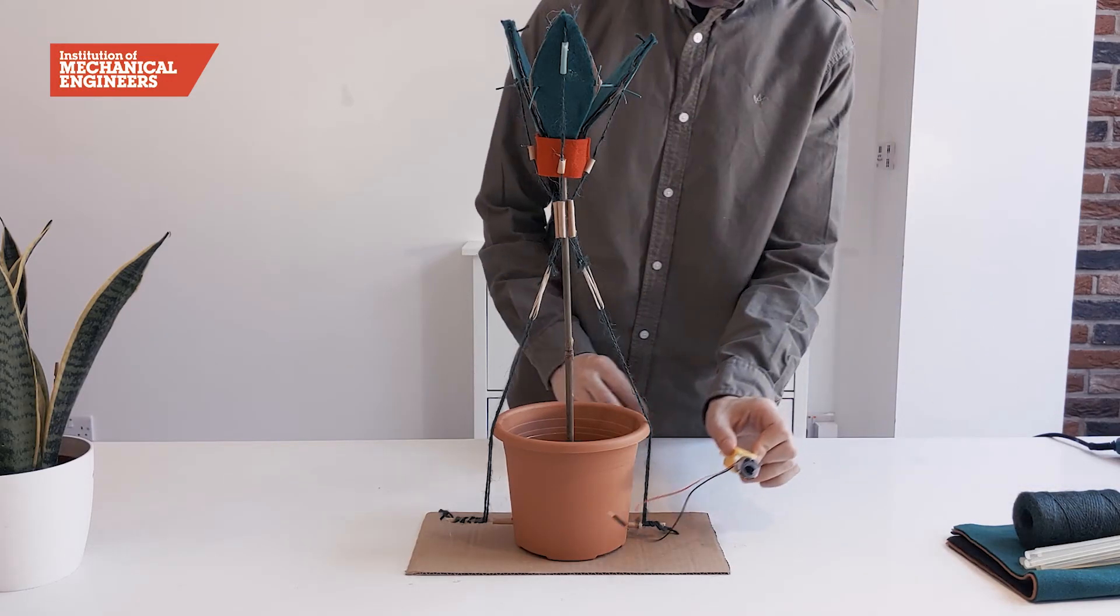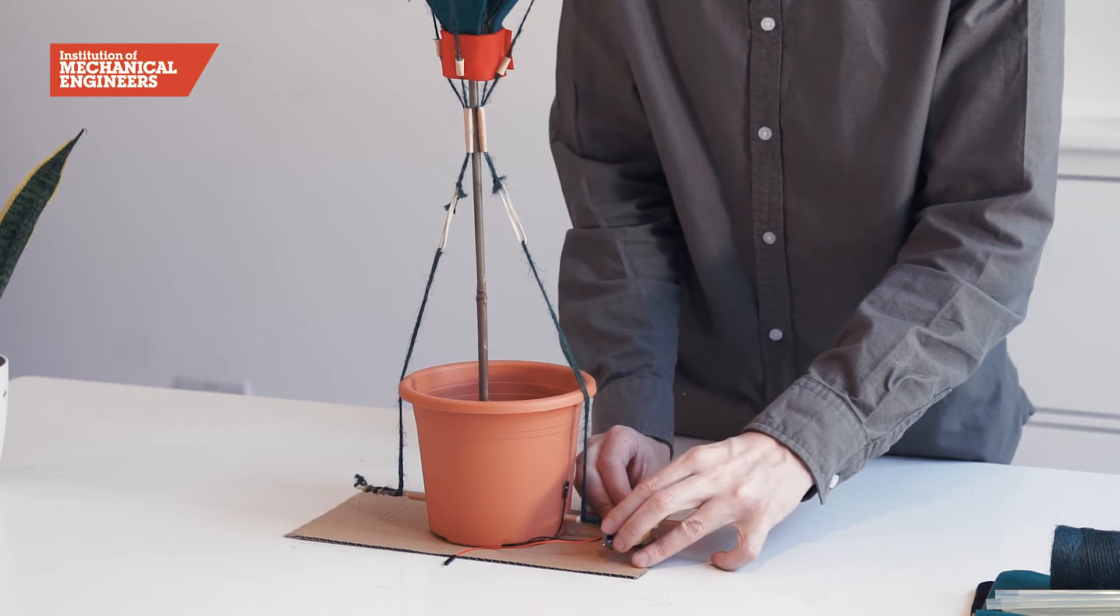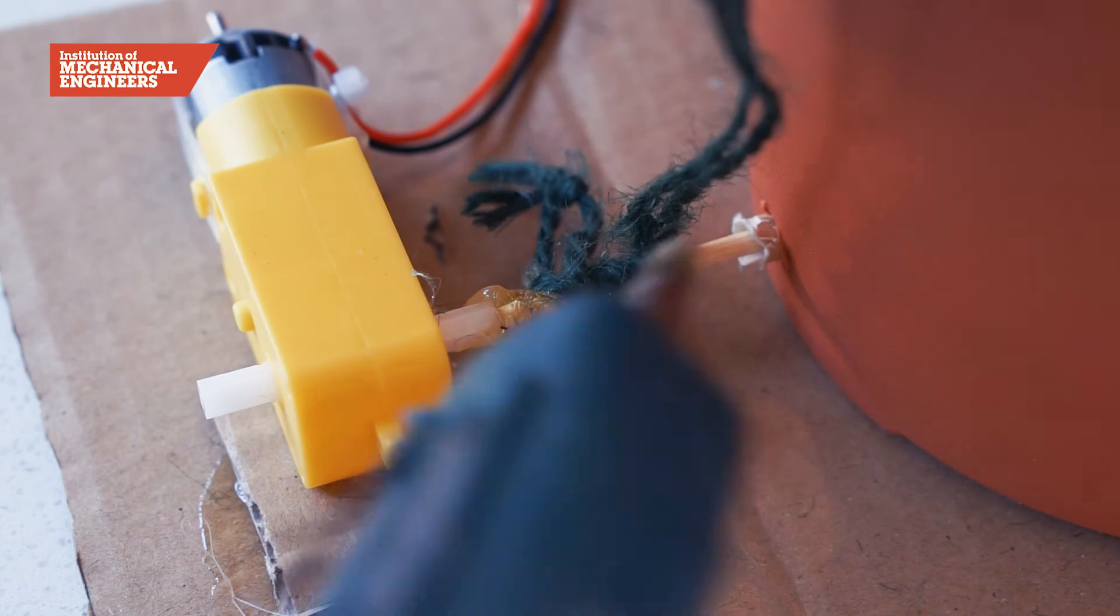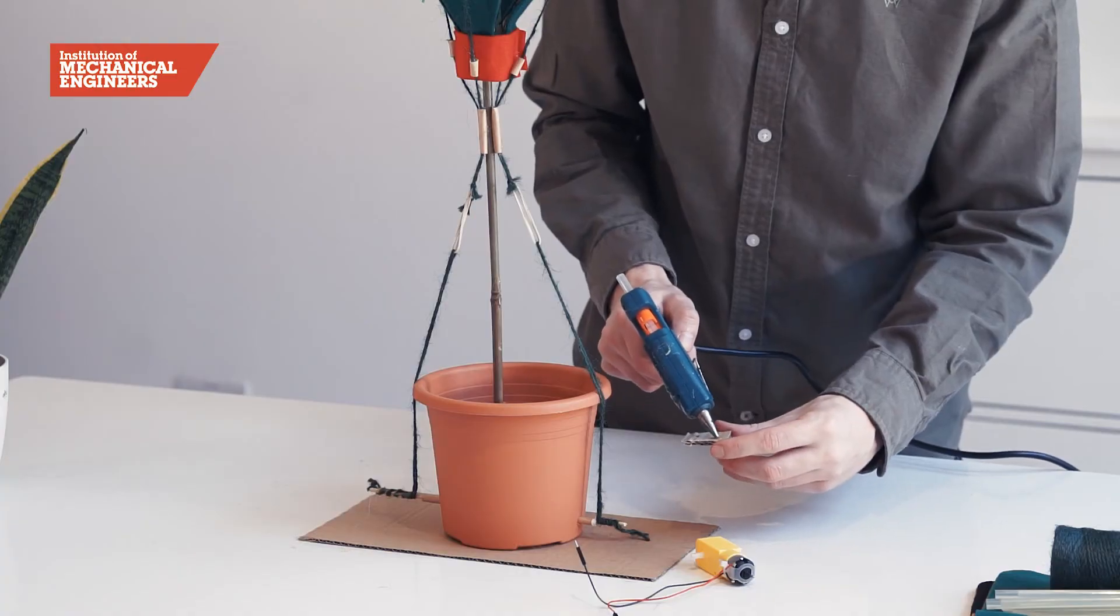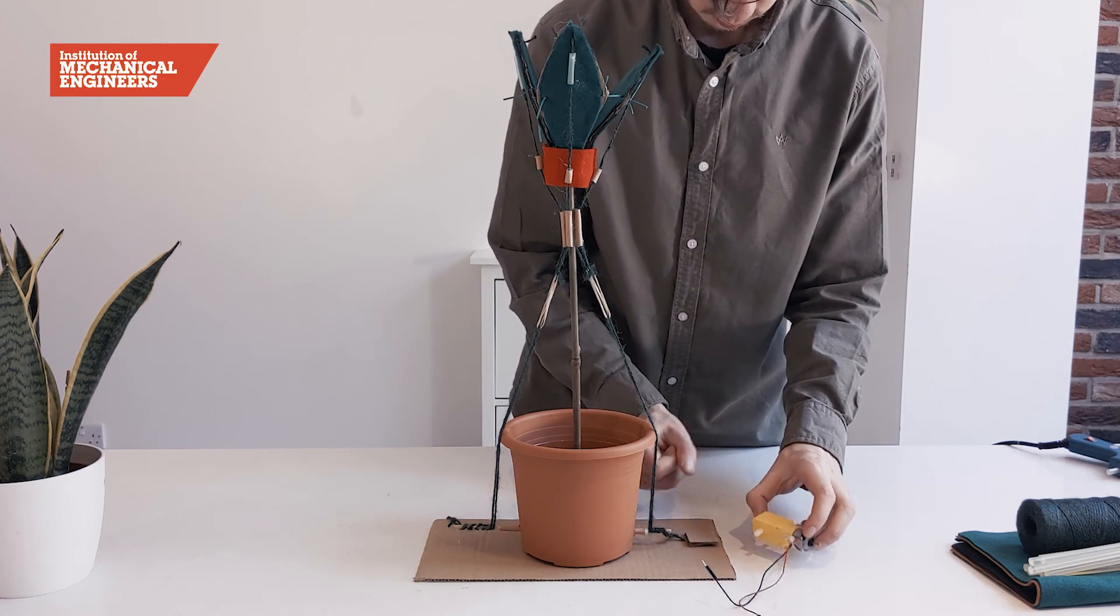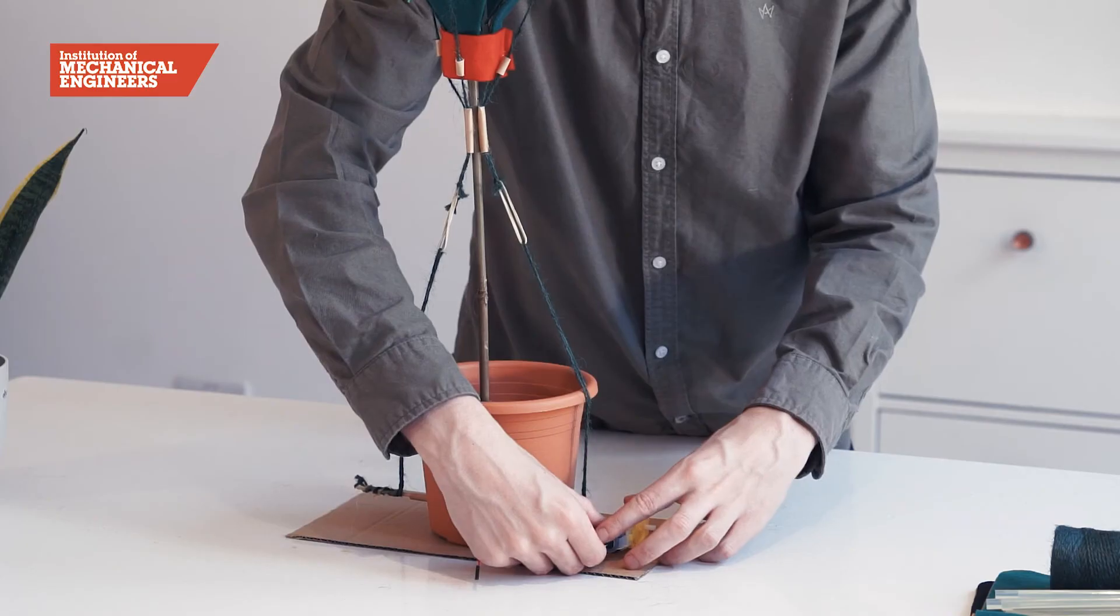Now, connect the motor to the winch spool by pushing the end of the kebab stick into the hole on the side of the motor and using hot glue to secure it. To keep the motor still while it is on, stack some small pieces of card to raise it to the height of the spool and glue the card and motor to the base.